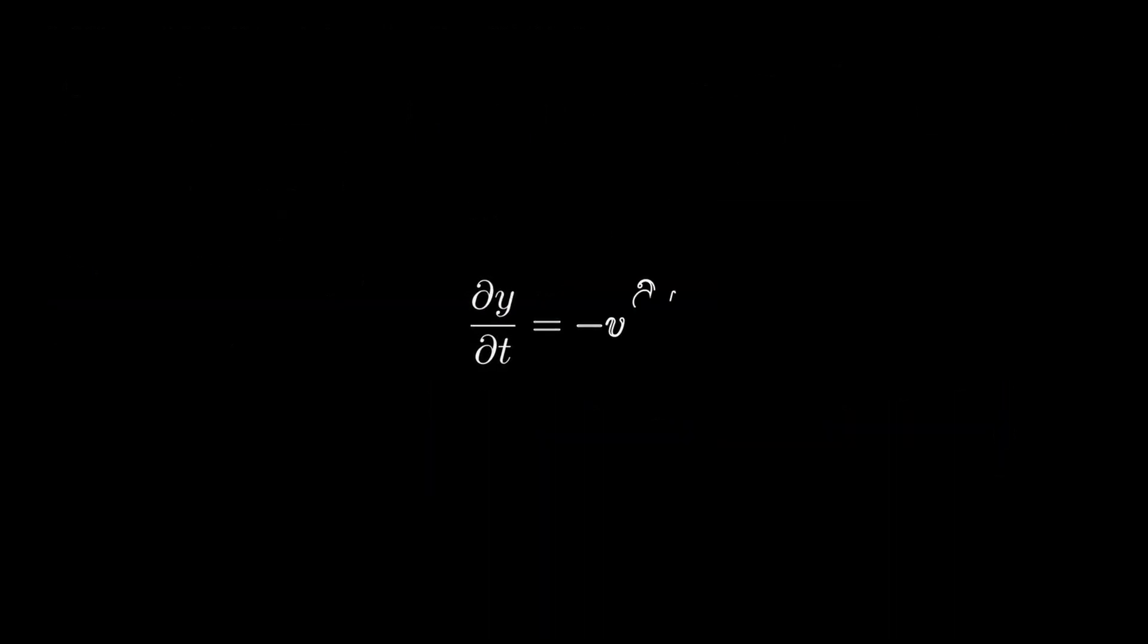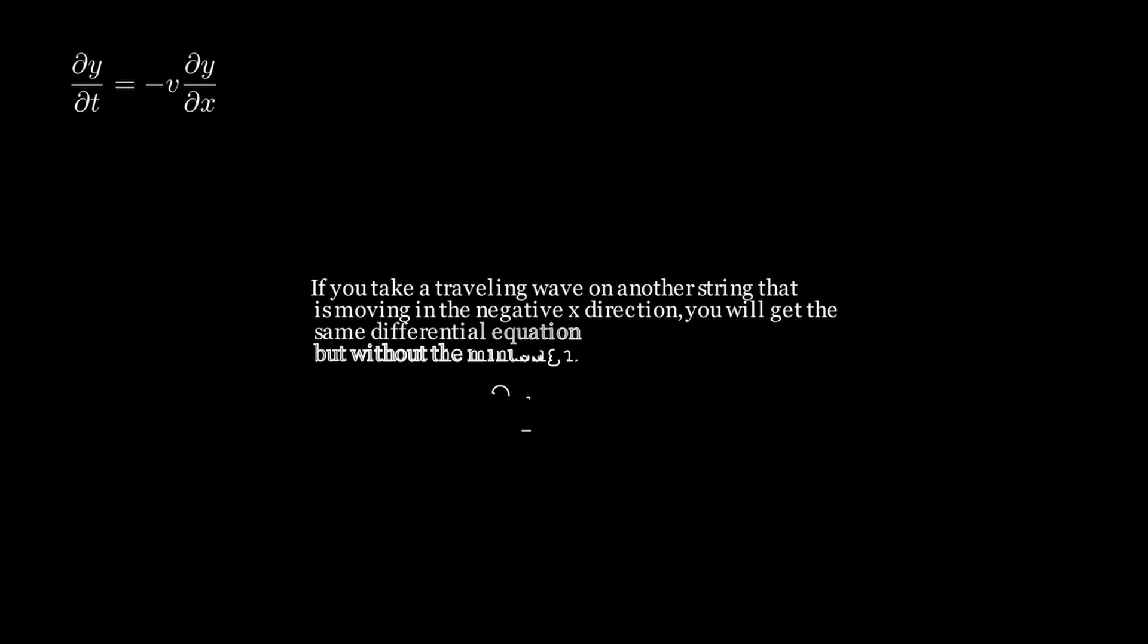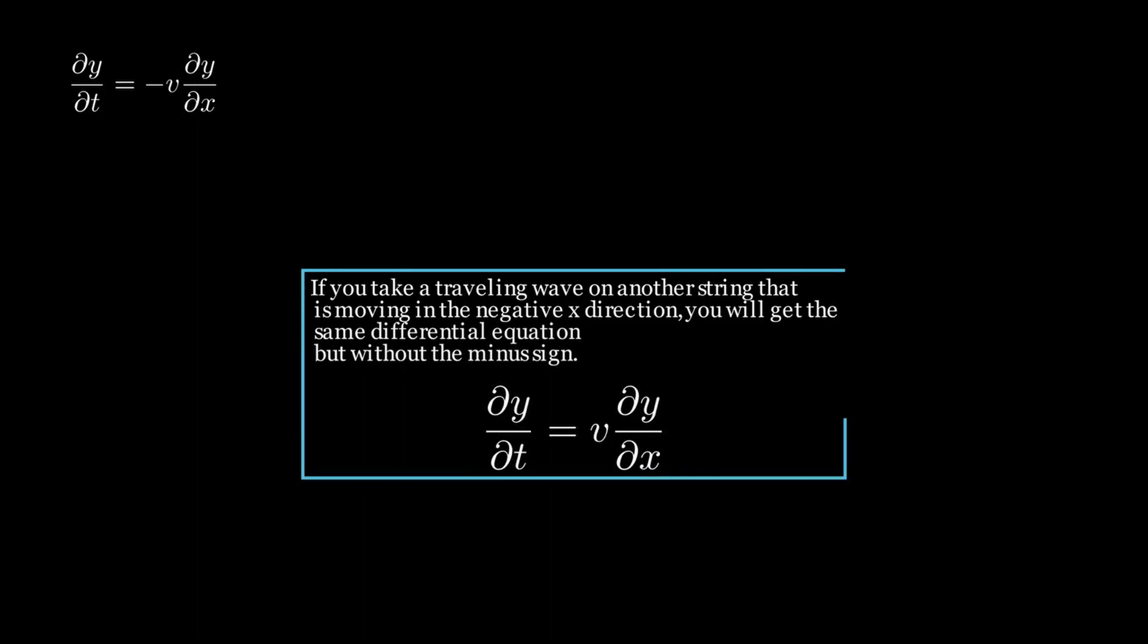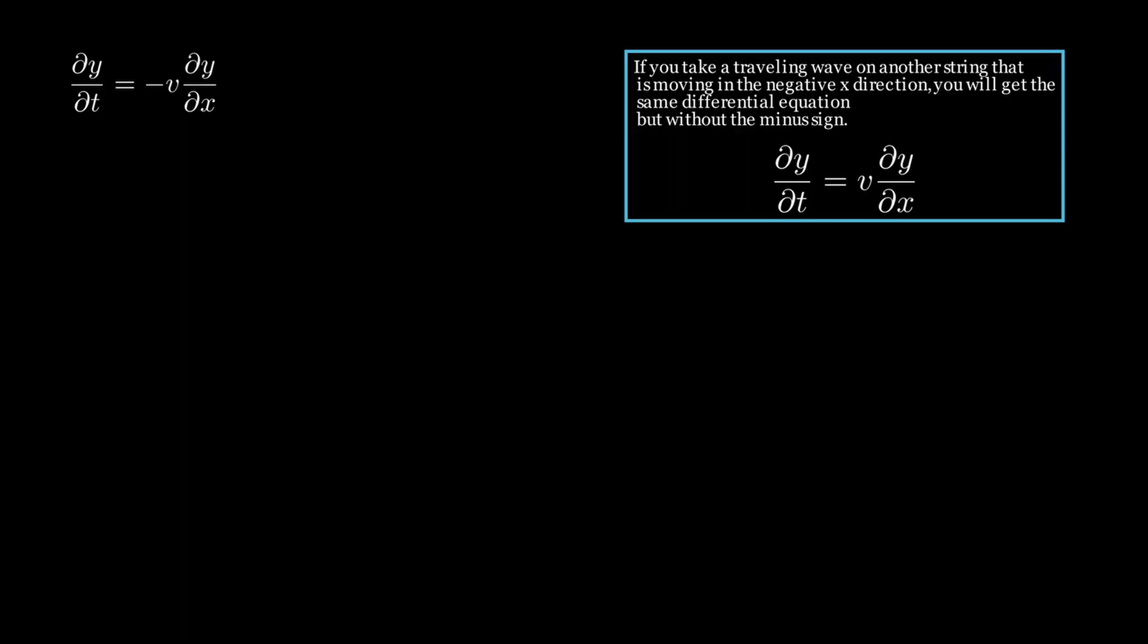The partial derivative of the displacement y with respect to time is plainly equal to the negative of the velocity times the partial derivative of y with respect to x. Similarly, if you take a traveling wave on another string that is moving in the negative x direction, you will get the same differential equation but without a minus sign.